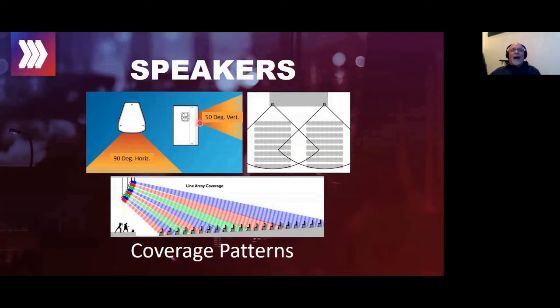In actuality, the high frequencies are going to be a little tighter. The low frequencies tend to be more omnidirectional or wrap around the box more. So this is really just an average of the frequencies and where they drop off by 6 dB from center.